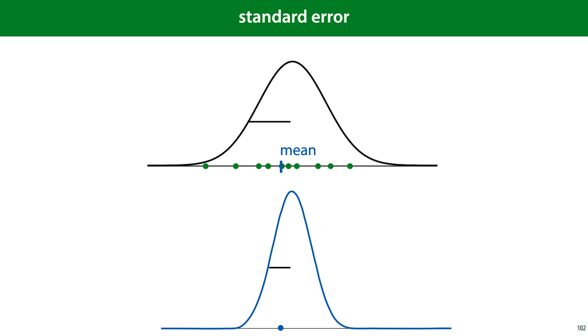The distribution on the bottom is known as a student's t-distribution, and for large enough sample sizes, more than 100, we can treat this as a normal distribution. In practice, if the variance of the distribution on top, the variance of the distribution we're sampling from, is called sigma, then the variance of the distribution on the bottom is sigma divided by the square root of the number of points we've sampled from the distribution on the top.